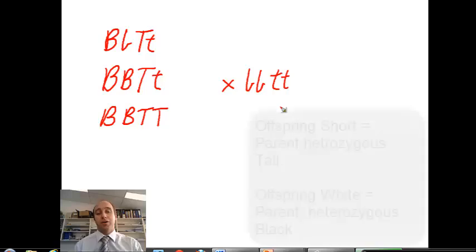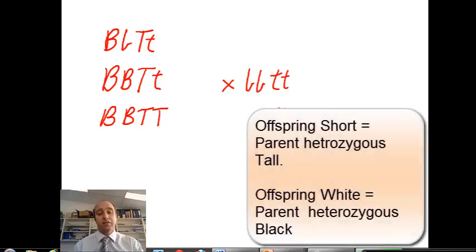And that would tell you whether your black tall sheep is recessive for one characteristic or recessive for both characteristics. Again, if it turned out short or white, you'd know that it must be carrying that recessive gene.